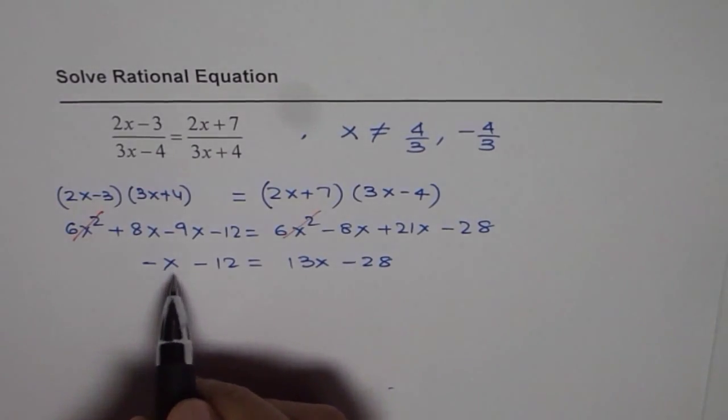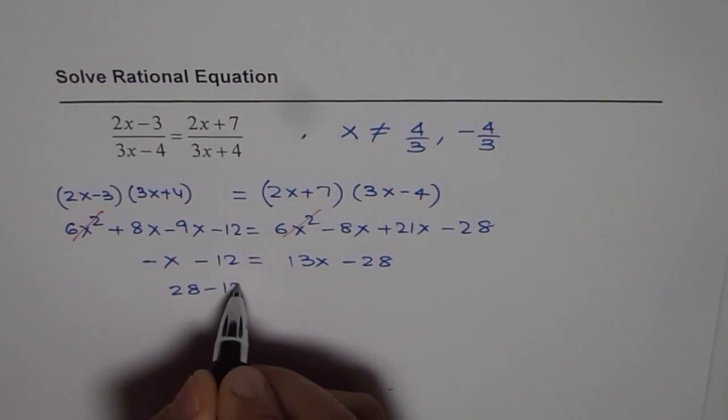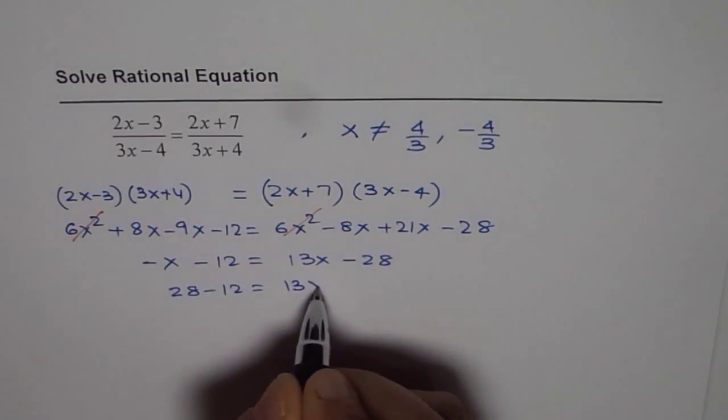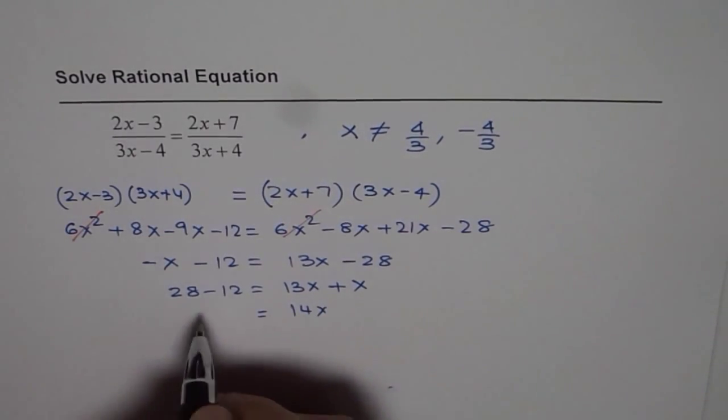So let's bring x on one side and the numbers on the other side. We get 28 minus 12 equals 13x plus x, which gives us 16 equals 14x.